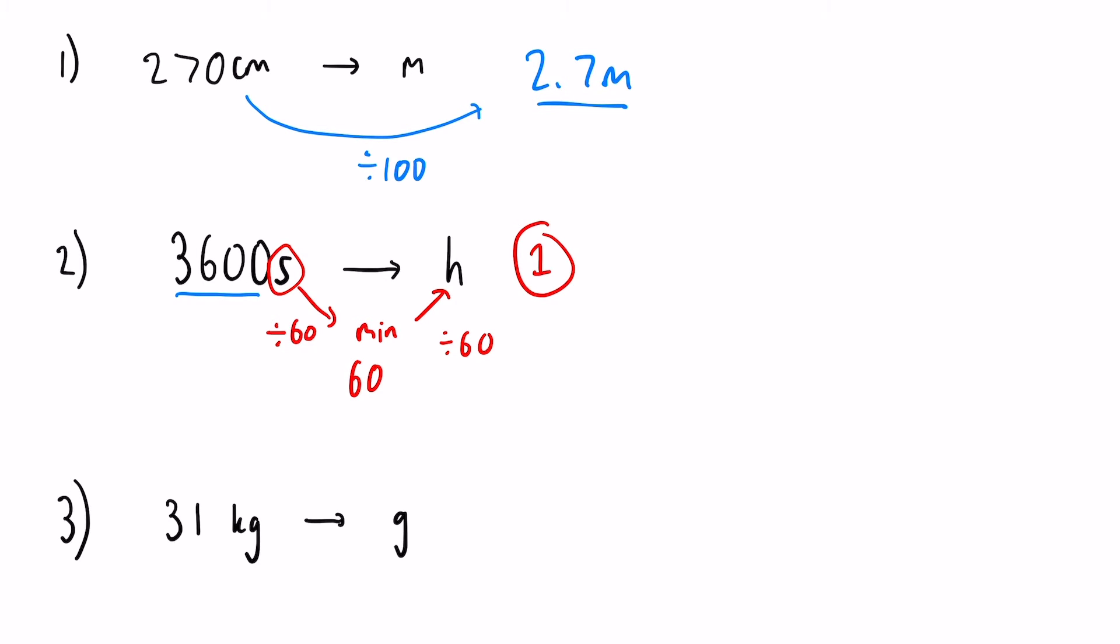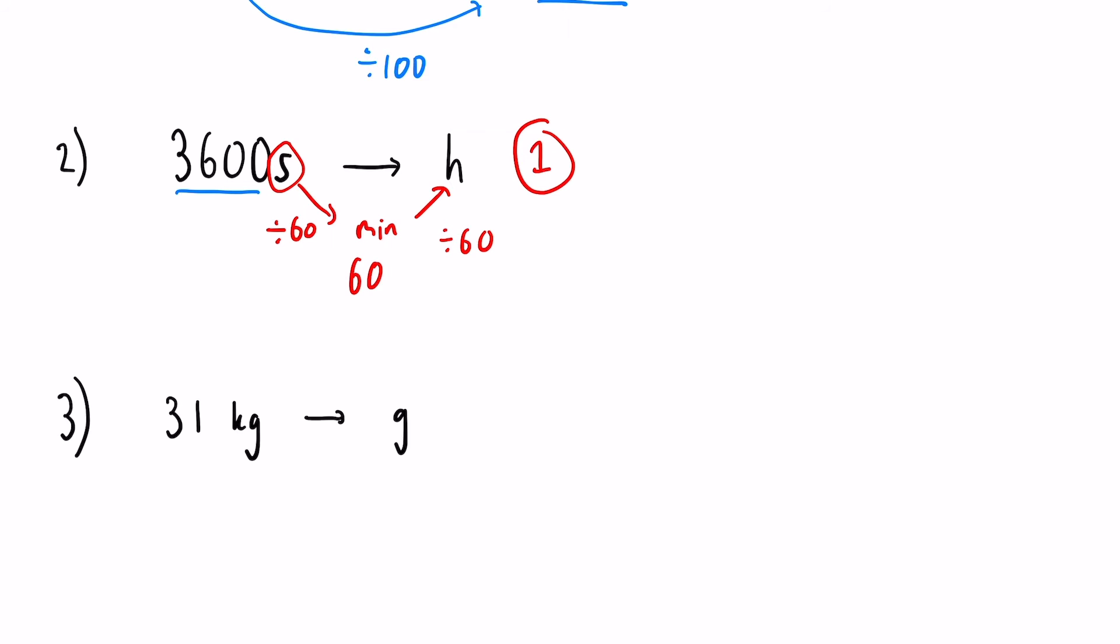Finally, kilograms to grams. We're going from the bigger unit to the smaller unit, so it's important to think about that so you know roughly whether your answer is bigger or smaller. 31 kilograms to grams: kilograms are a lot bigger than grams, so our number is going to be bigger when we multiply it. Kilograms to grams is a thousand, so our final answer is 31,000.